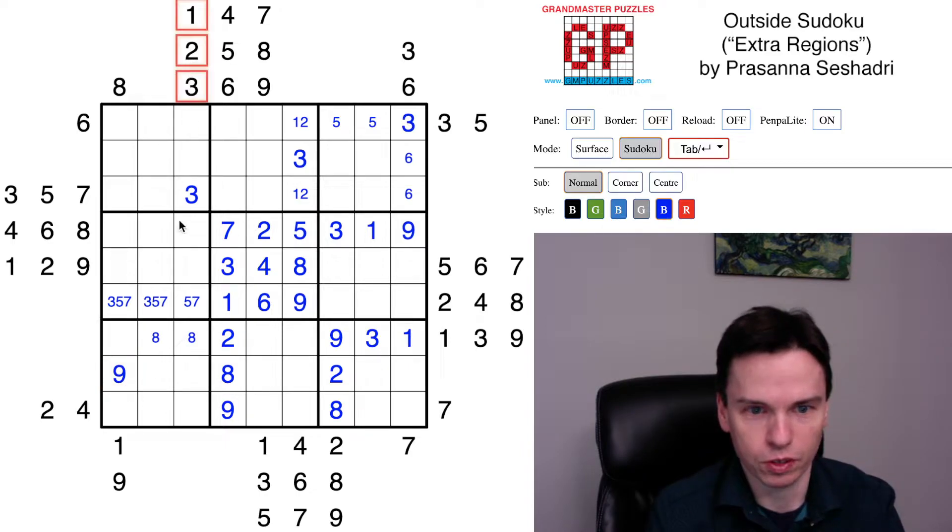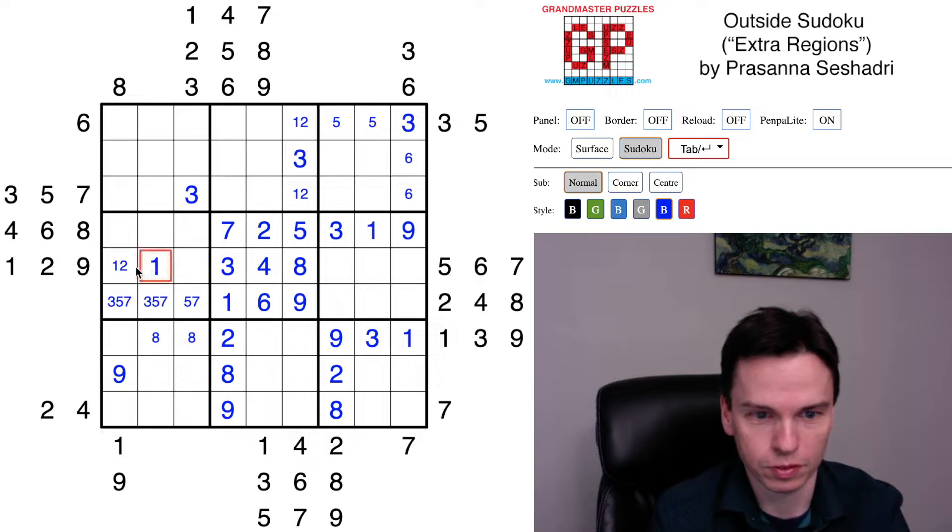Notice with 1, 2, 3 here we only have 1, 2 there and actually this 1 forces 1 and 2, so 9 is in the cell.